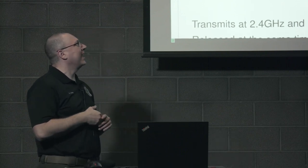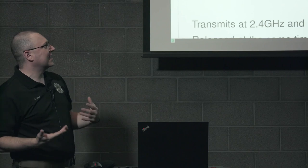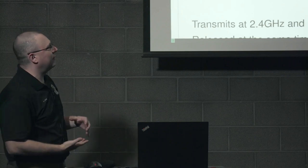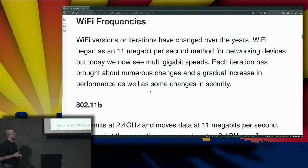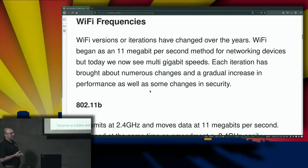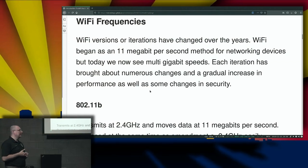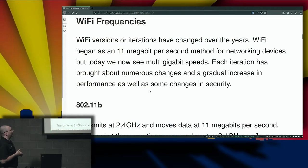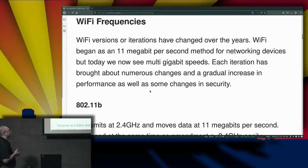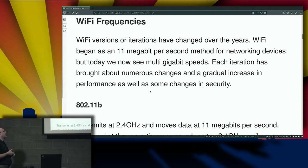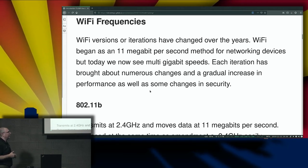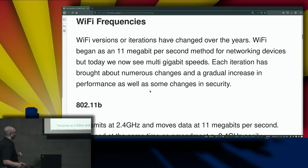Wi-Fi itself began as an 11-megabit-per-second method for networking devices. Today we're now seeing multi-gigabit speeds, which is a far cry from when this first came out. Each iteration has brought about numerous changes and gradual increases in performance.